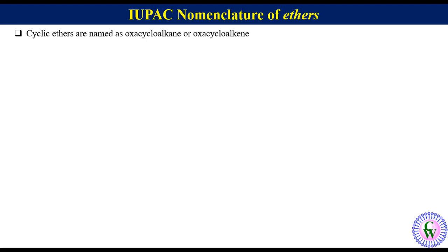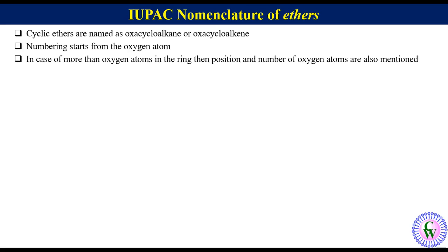Now we will discuss IUPAC naming of cyclic ethers. Cyclic ethers are named as oxacycloalkane or oxacycloalkene depending on whether the ring is saturated or unsaturated. Numbering starts from the oxygen atom, so by default the position of oxygen is 1. Because of this it is not necessary to mention the position of oxygen in the IUPAC name. If there are more than one oxygen atoms in the ring, their positions and number are also mentioned. For example, compound J with a six-membered ring and one oxygen atom is called oxacyclohexane.